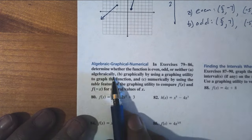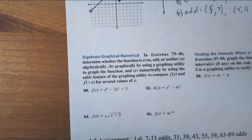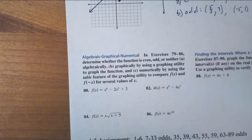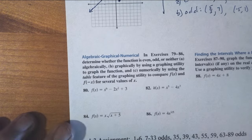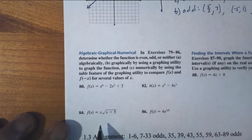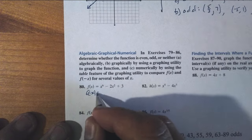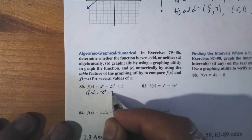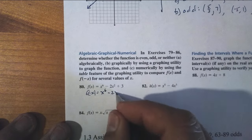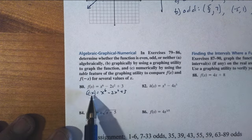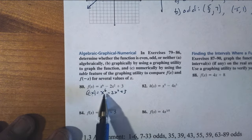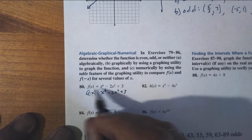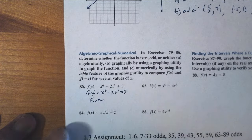Now we determine whether a function is even, odd, or neither algebraically by putting in negative x. For f(negative x) with f(x) equals x to the sixth minus 2x squared plus 3: negative x to the sixth becomes x to the sixth, and minus 2 times negative x squared — the squared cancels the negative — plus 3. The height to the left is exactly the same as the height to the right. This one is even, and that's quicker than using the calculator.